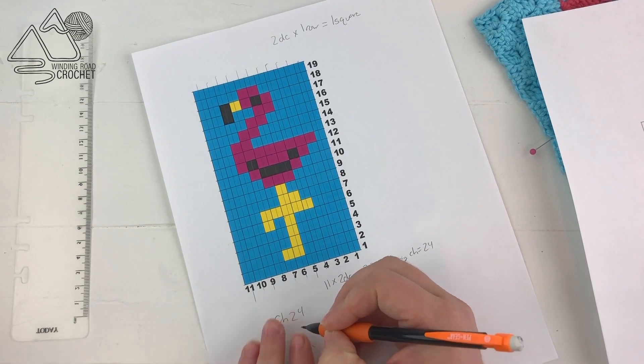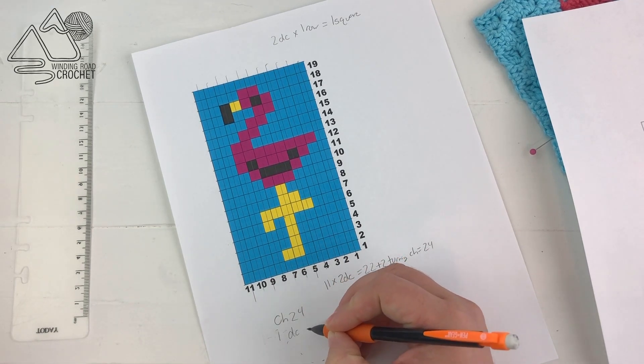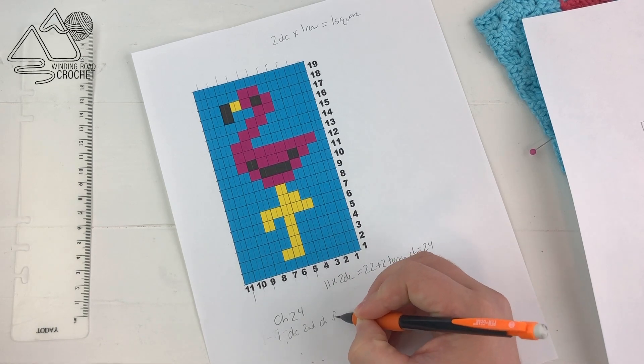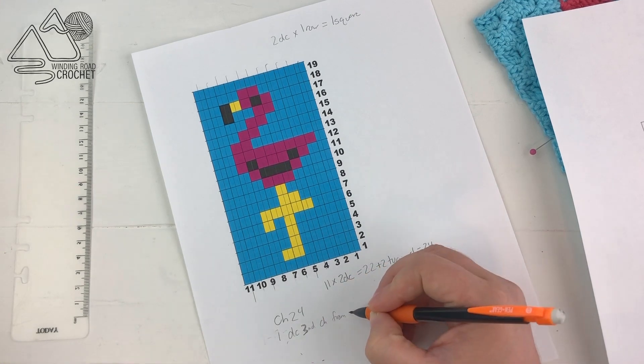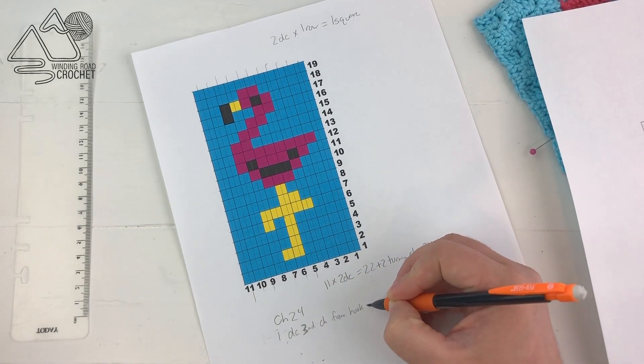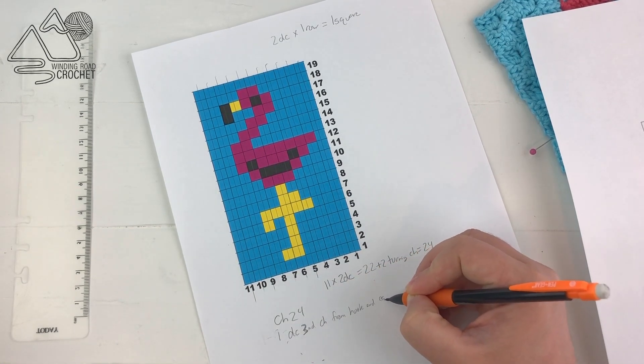Then for row 1, when I write out row 1, I know I'm going to double crochet into the third chain from the hook and in every chain across, which is going to give me a total of 22 double crochet.